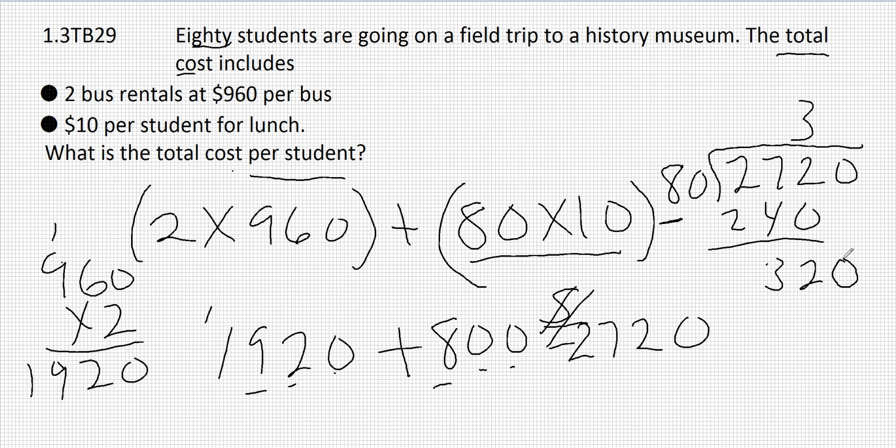And bring down the 0. And again, I see that 8 times 4 is going to give us 32. So that's also going to work for 320. And there is our answer. Each student will cost $34 to go on the field trip.